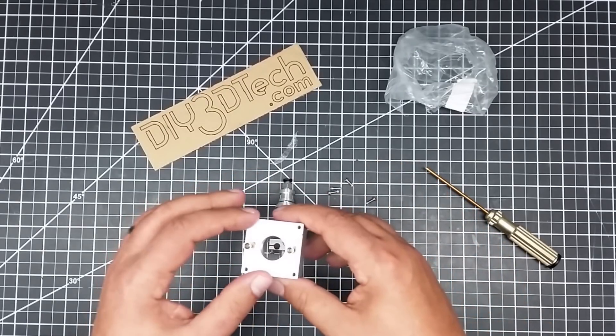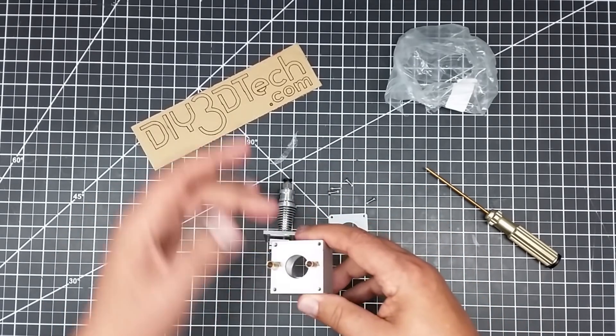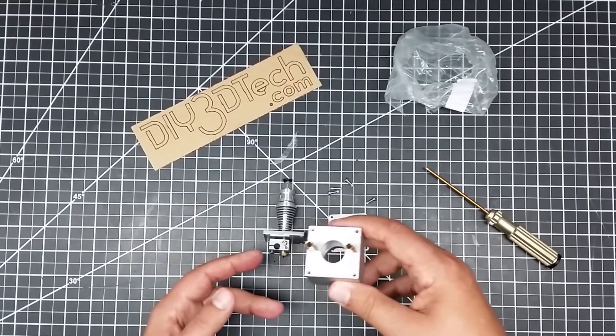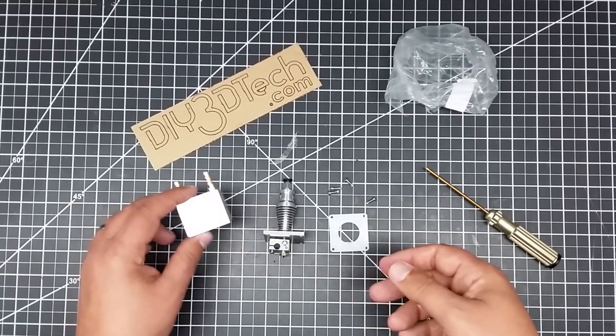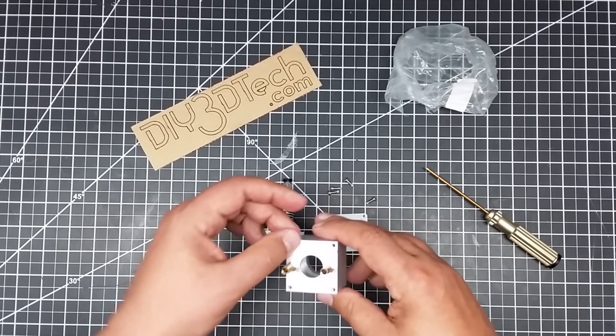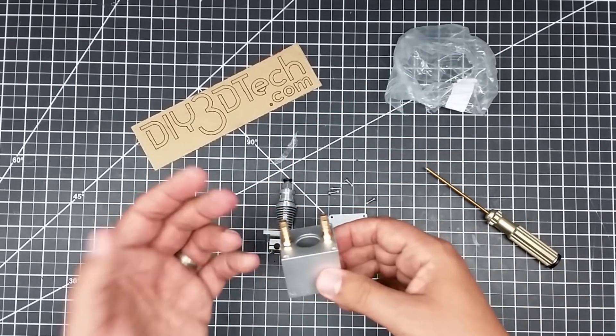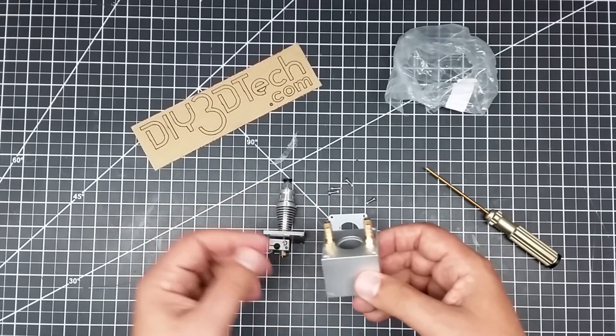So you can probably machine up something to kind of mount this and connect this to your carriage for the 3D printer. And so that's probably what I will do is machine something up on the CNC to actually mount this to the printer. I'm really kind of excited to get this going to work on this.